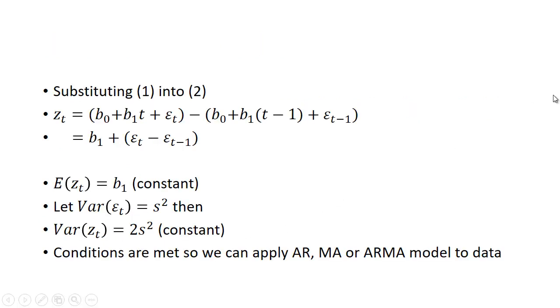So if we do that, it turns out that substituting (1) into (2) we get this equation here. This is y_t and we're going to subtract out y_(t-1), and if you do some manipulating you get this value here for z_t.